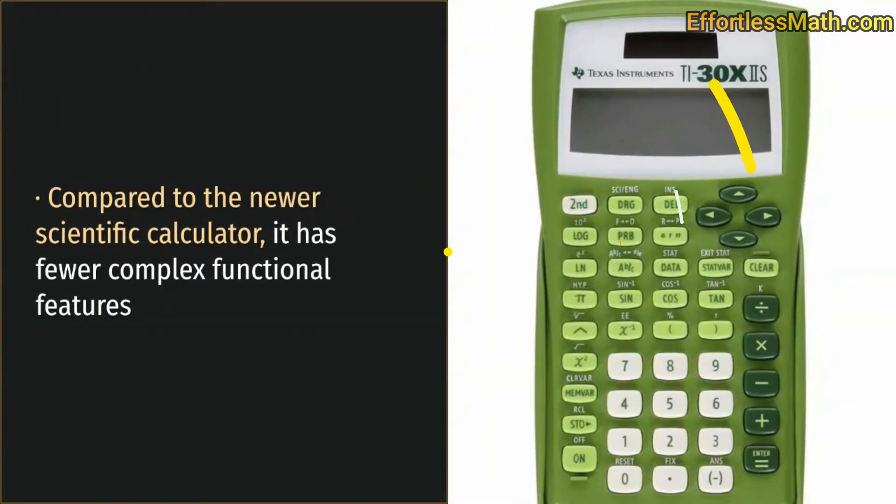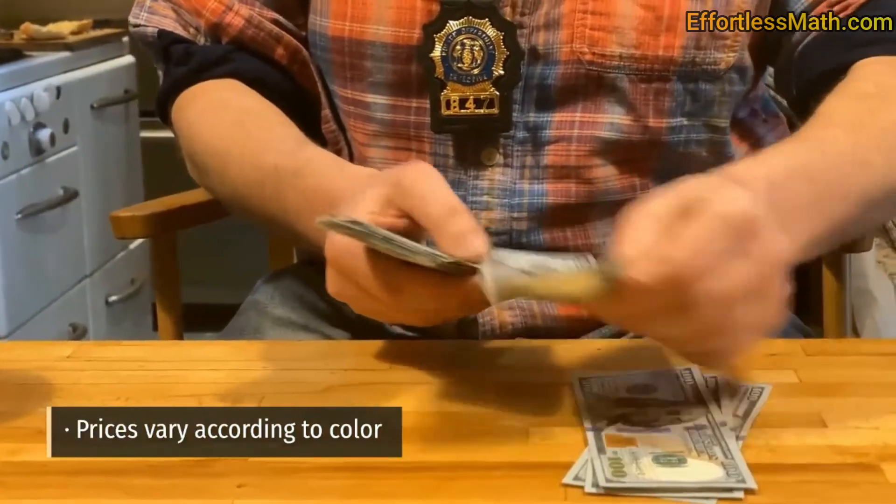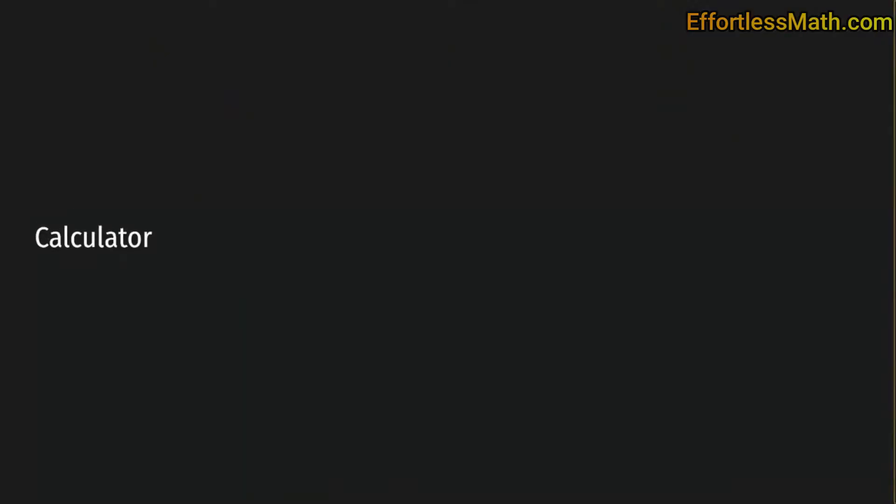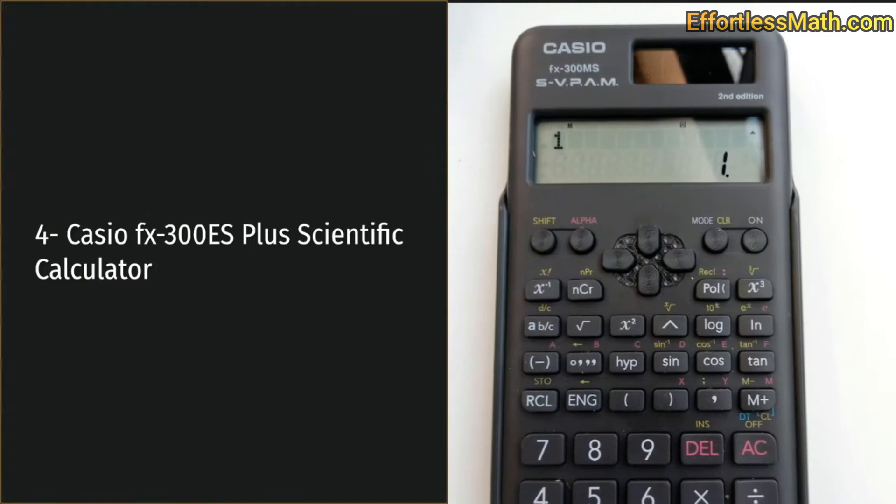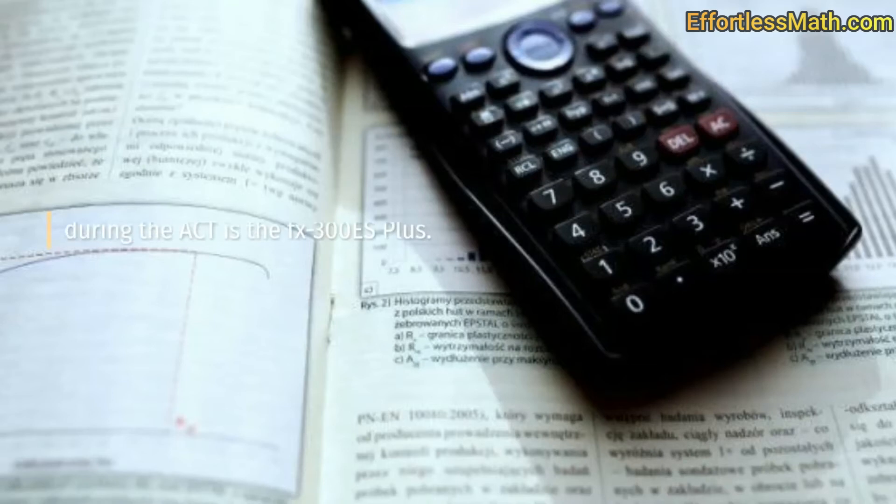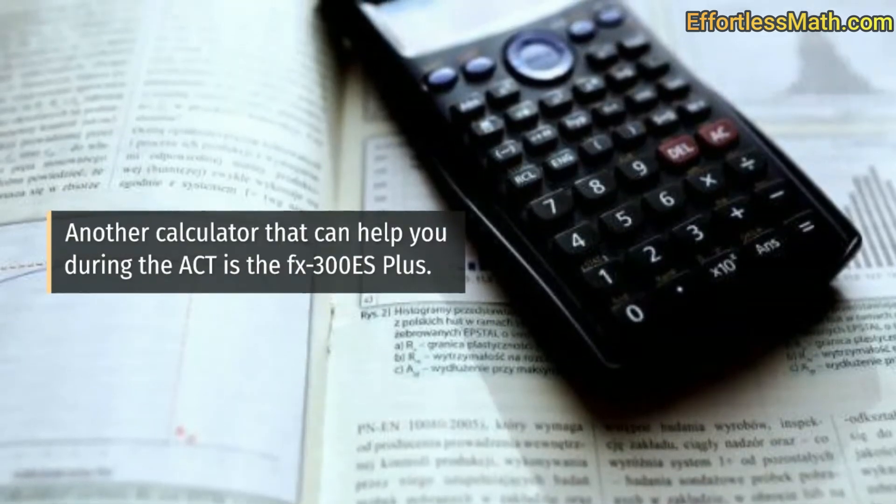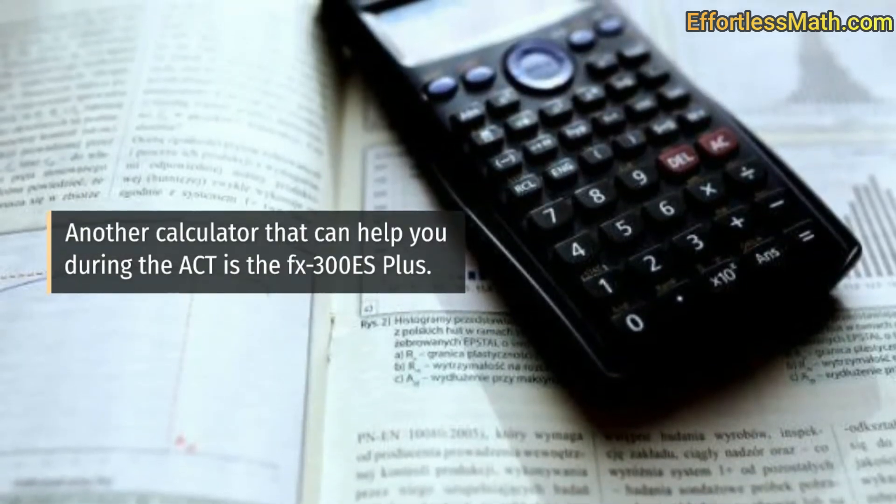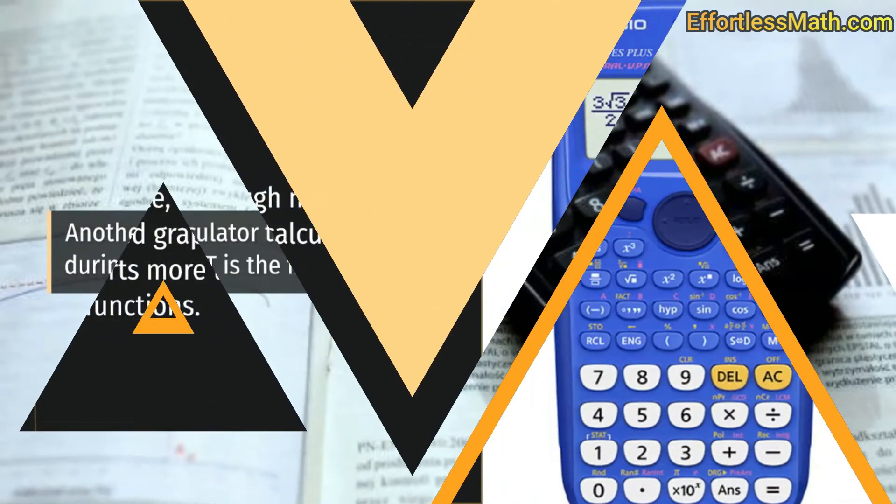Cons: compared to newer scientific calculators, it has fewer complex functional features. Prices vary according to color. Four: Casio FX-300S Plus scientific calculator. Another calculator that can help you during the ACT is the FX-300S Plus.